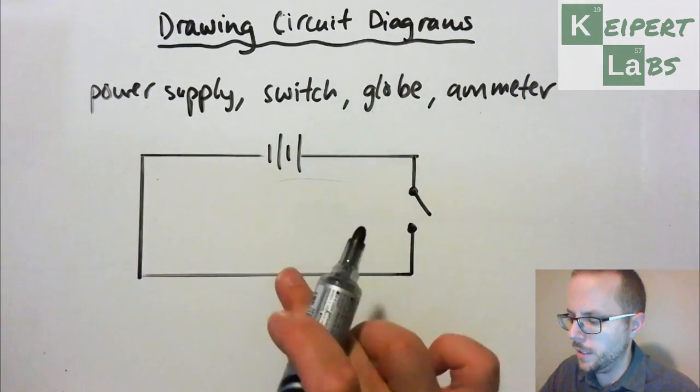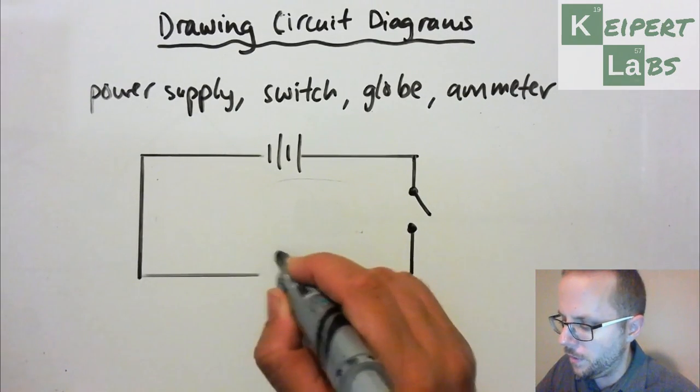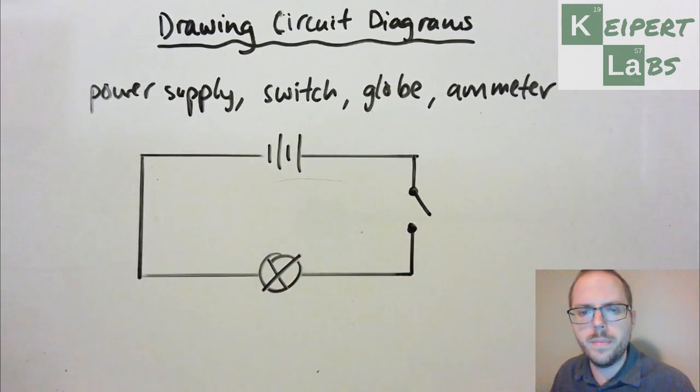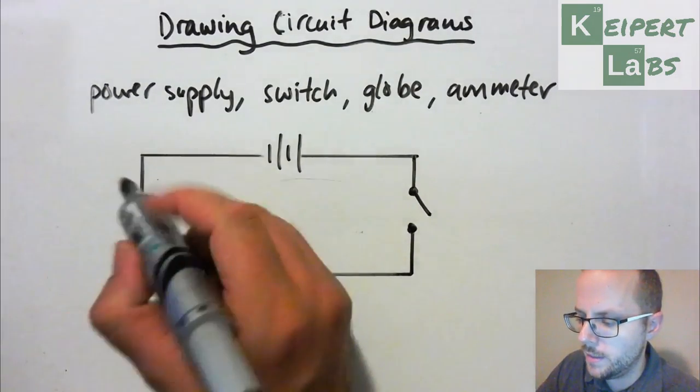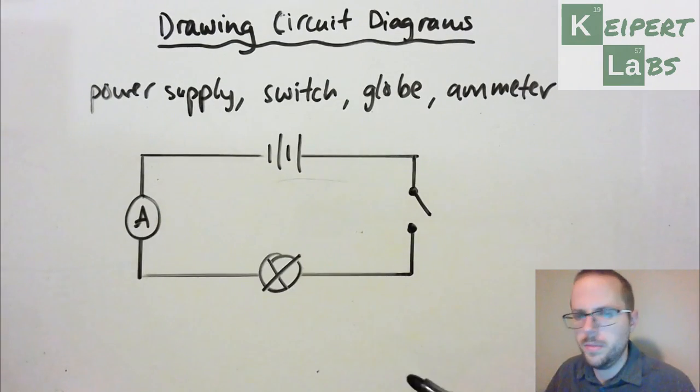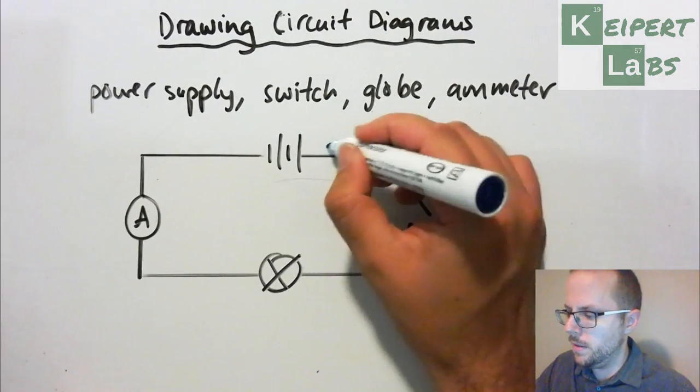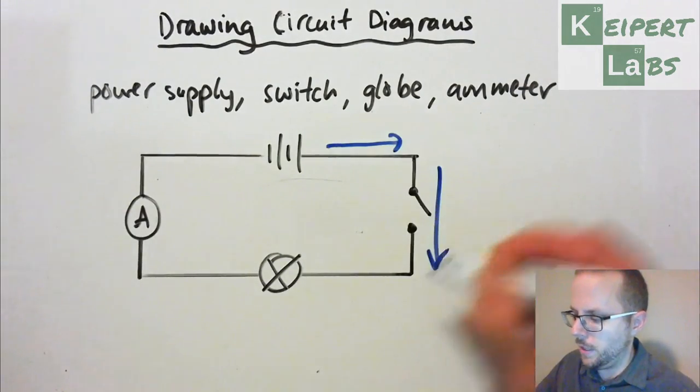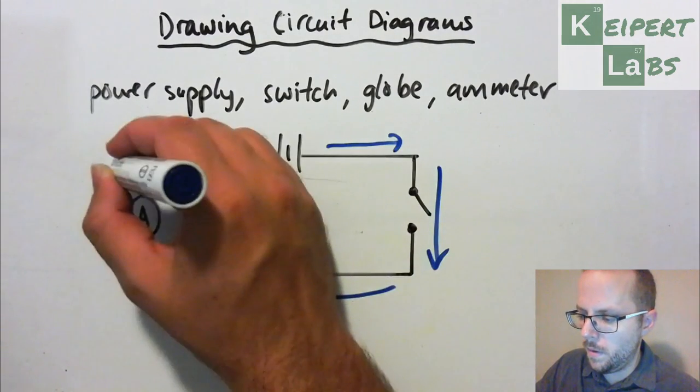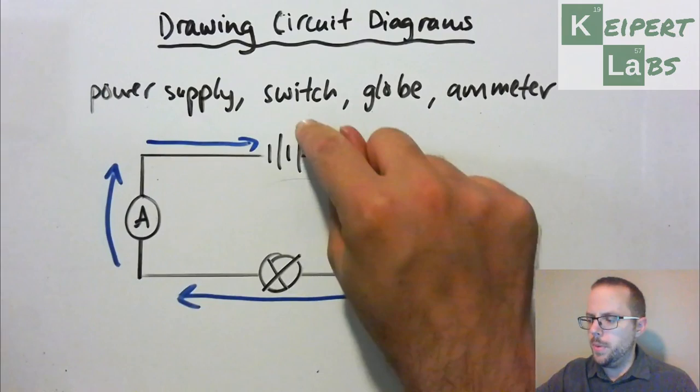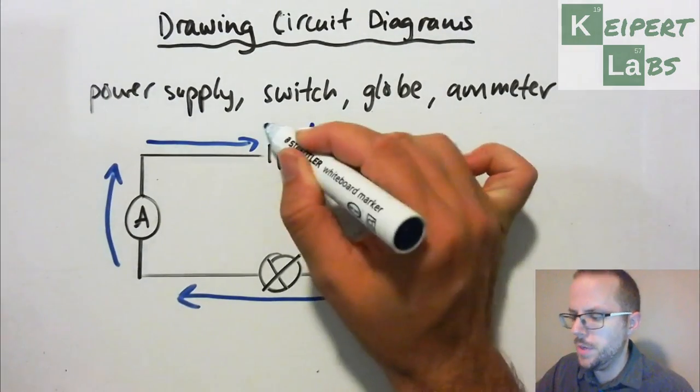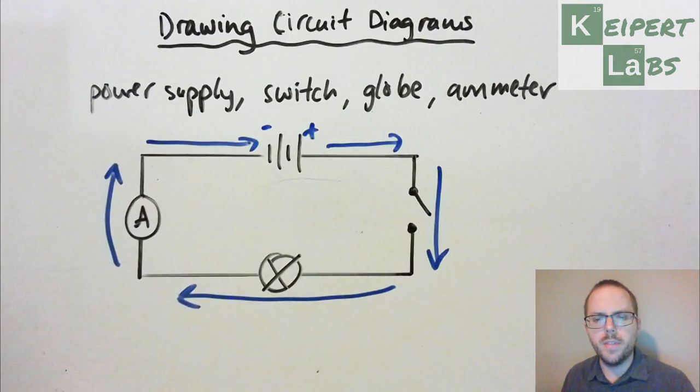So I'm going to draw my switch over here and I'm going to draw my switch being open like that. Going from the switch, it goes around to the light globe and I'm going to draw that over here. I'm going to do a circle, I'm going to do a cross through it to show my light globe and then it's going around to an ammeter and I'm going to do that on the last side over here, a circle with an A through the middle. So my current is going around in this direction. So it flows in one direction and so it flows from positive around to negative.